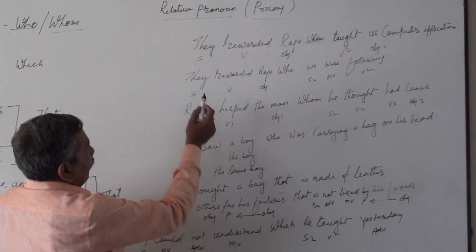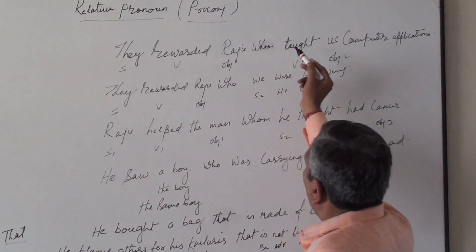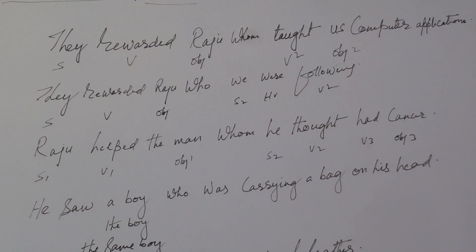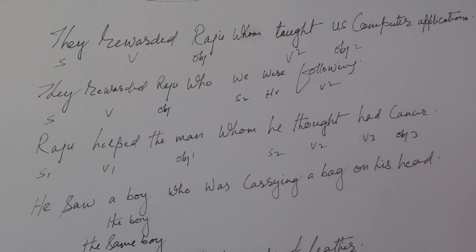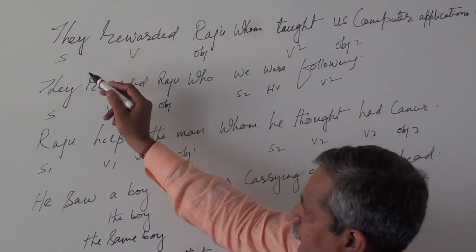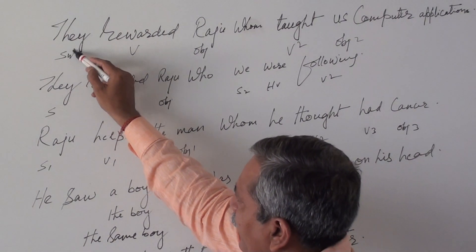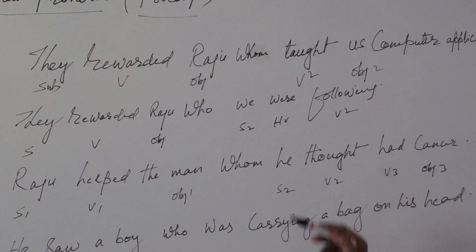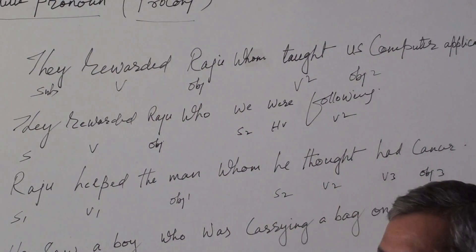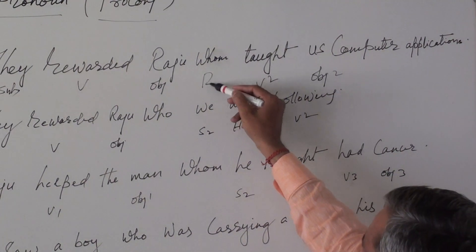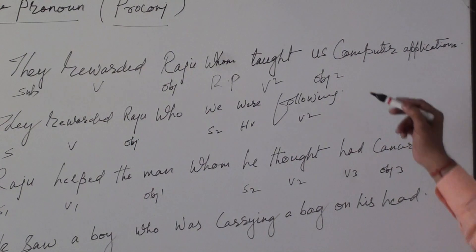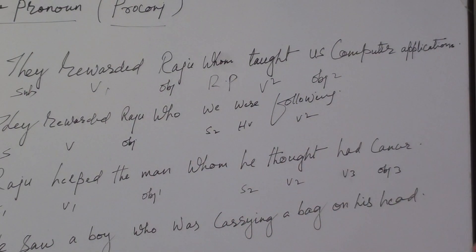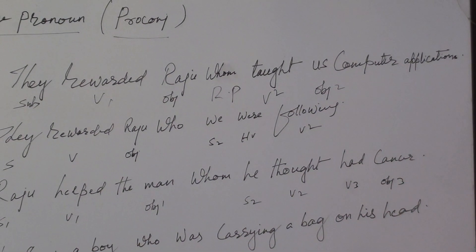See the first sentence: 'They rewarded Raju who taught us computer application.' Now just break the sentence into parts of speech and it will be clear to you. They is acting as subject, rewarded is the verb, Raju is the object of this verb. This is the relative pronoun. Taught is the second verb — first verb is here, second verb there. Us is the object.